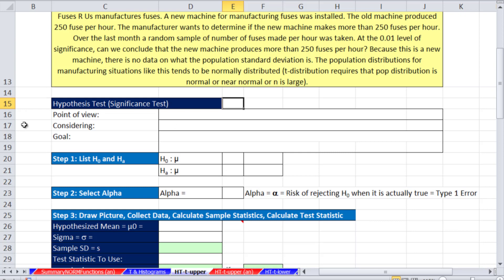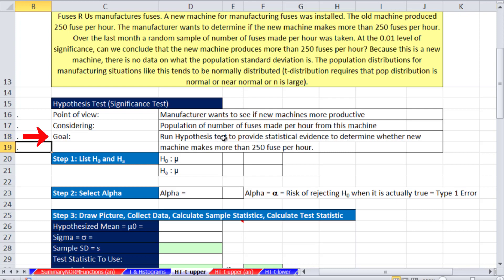Now, just as before, when we're setting up hypothesis testing, it's helpful to think about what the point of view is, what you're considering, and what the goal is. The point of view here is clearly the manufacturer wants to see if the new machine is more productive. What are we considering? The population of number of fuses made per hour for this machine, and our goal is to run hypothesis tests to provide statistical evidence to determine whether the new machine makes more than 250 fuses.